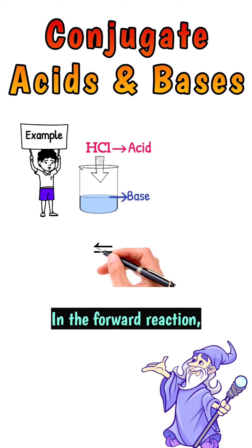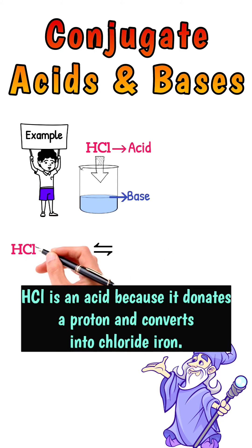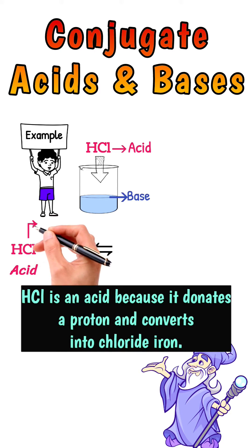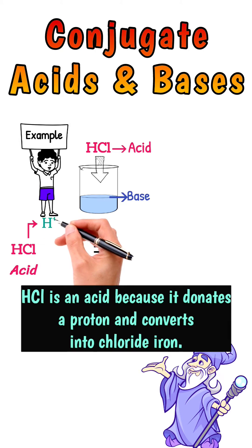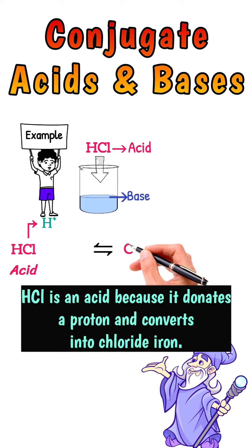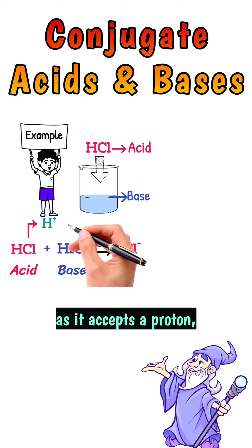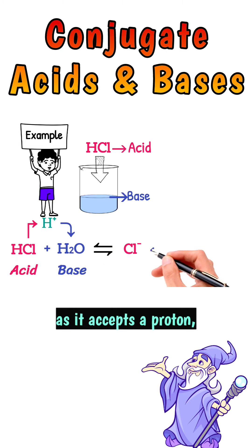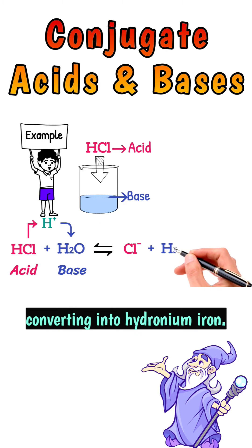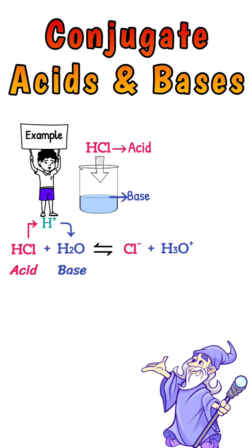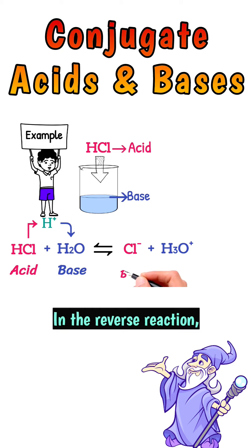In the forward reaction, HCl is an acid because it donates a proton and converts into chloride ion. Whereas H₂O is a base, as it accepts a proton, converting into hydronium ion.